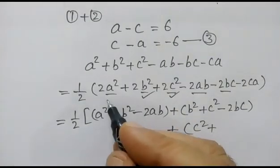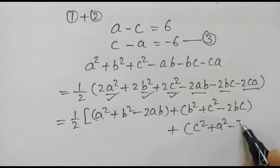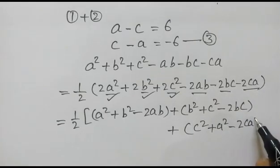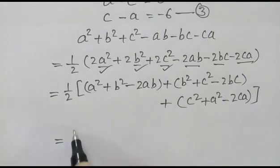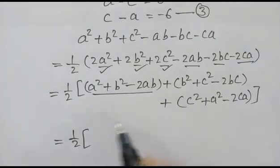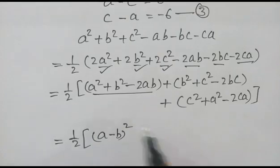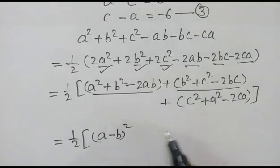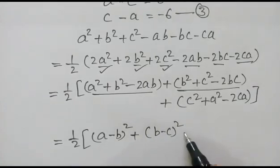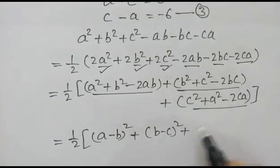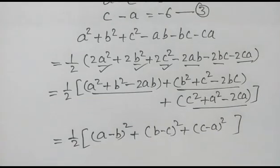Rearranging further, this becomes half of: (a minus b) whole squared, plus (b minus c) whole squared, plus (c minus a) whole squared.